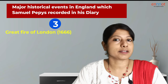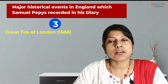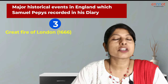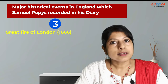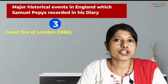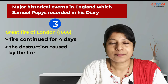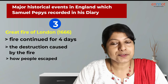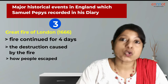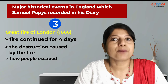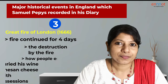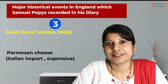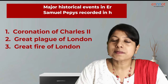The third event Samuel Pepys recorded is the Great Fire of London. Soon after the Great Plague, London faced another major crisis — the Great Fire of London in 1666 — which had an incredible impact on London and its people. In his diary, Pepys described how the fire continued for four days and nights and the destruction it caused. He added how people escaped in boats on the River Thames. One interesting fact is that as the fire approached his house, he quickly dug a hole and buried his wine and cheese along with other possessions. The cheese, which was from Italy, was considered very valuable — but thankfully his house survived the fire.